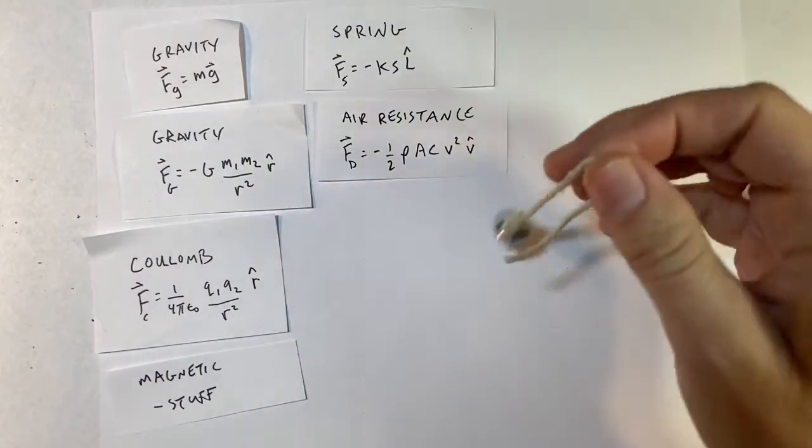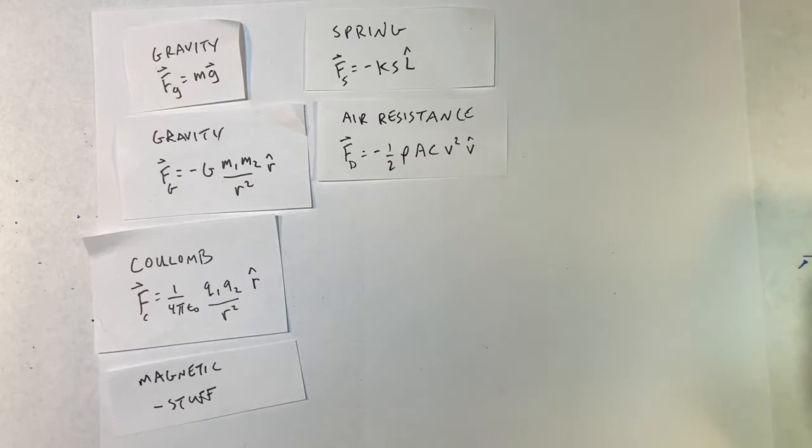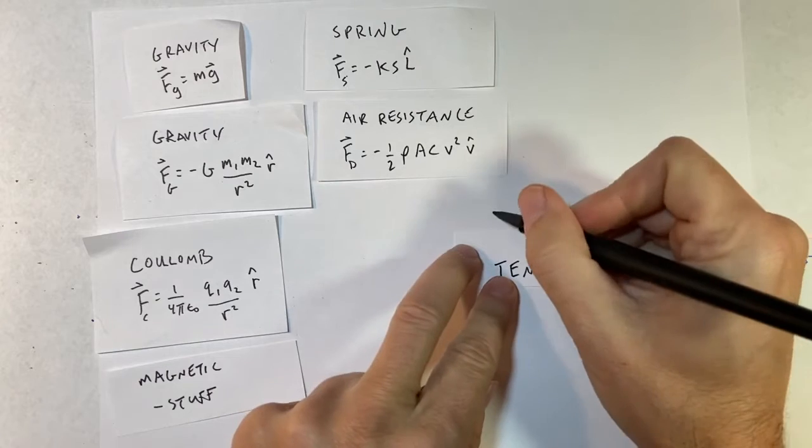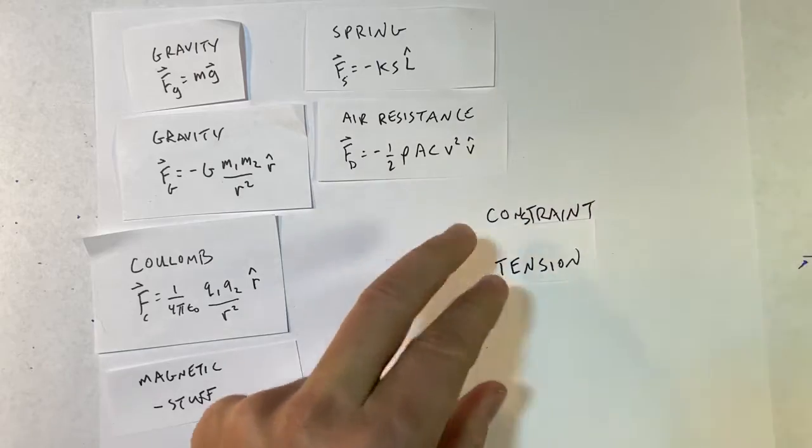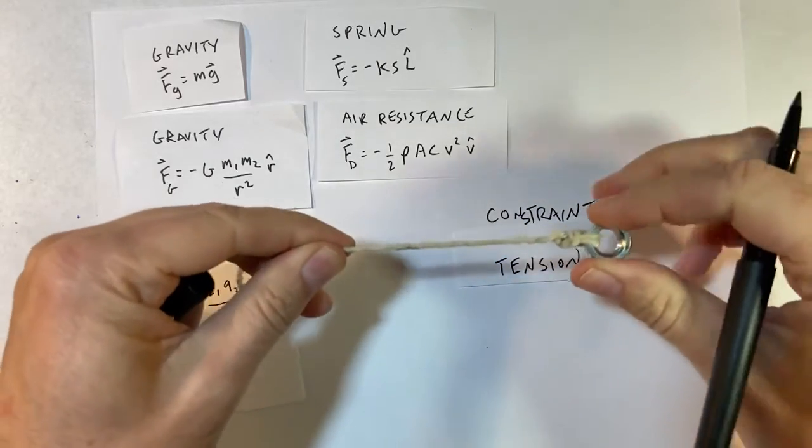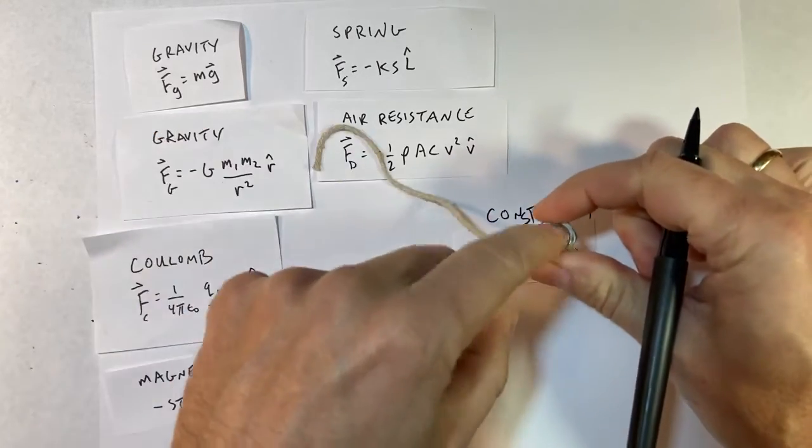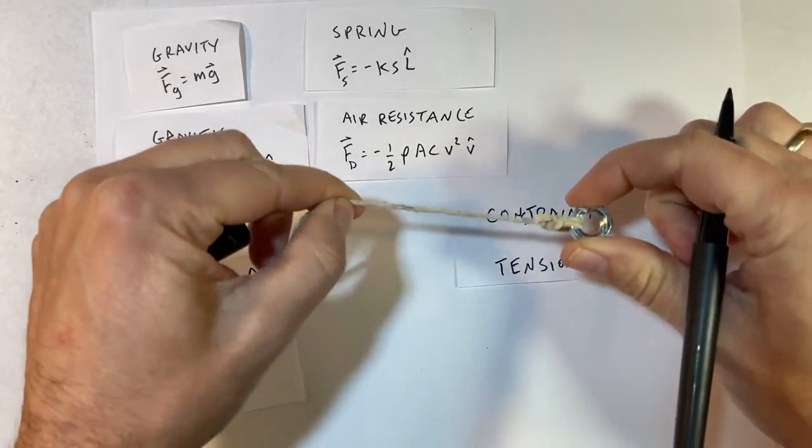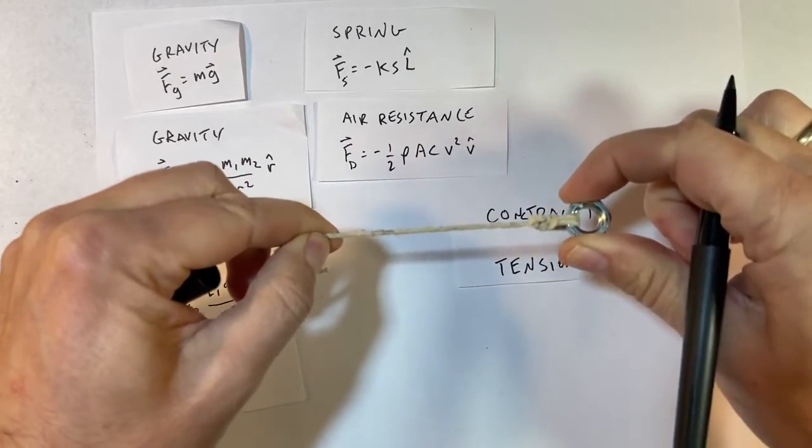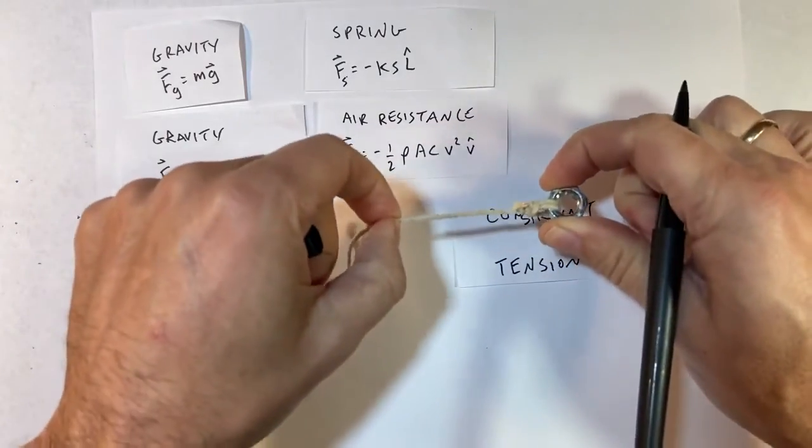But now what about something like this? A string. So the tension in a string is actually not something that you can calculate. So here's my first force of constraint. What this string does is exert a force. Imagine it's a perfectly perfect string—it exerts a force that prevents this mass from getting further away. So it says no stretching, even though it does stretch just a little bit. But that's our general tension force. It says it's going to pull with a force, whatever it needs to be, to keep the string from breaking. Of course, if you pull it too hard, it actually does break.